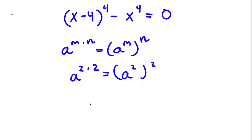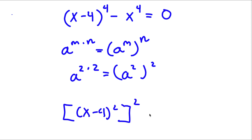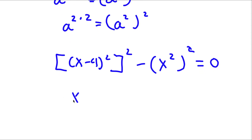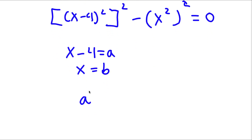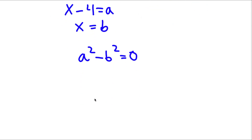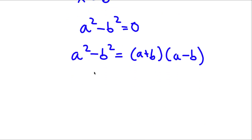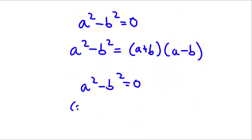I'm going to rewrite both (x minus 4) to the power of 4 and x to the power of 4 as: (x minus 4) squared, to the power of 2, minus x squared to the power of 2, equals 0. I can think of (x minus 4) squared as the variable a and x squared as the variable b. So now I have a squared minus b squared equals 0. Using the difference of squares identity, a squared minus b squared equals (a plus b)(a minus b), so (a plus b)(a minus b) equals 0.